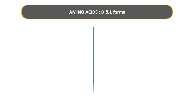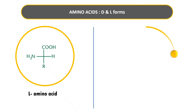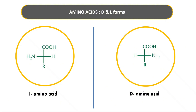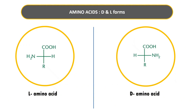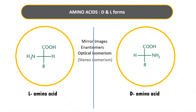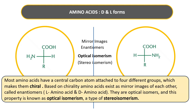Because of chirality, amino acids exist in two forms: D and L forms. Both forms look similar but are not the same — just like two hands. They look similar but are not interchangeable and not superimposable. The D and L forms of amino acids are mirror images of each other and are called enantiomers. Because they are non-superimposable mirror images, this is called optical isomerism, which is a type of stereoisomerism.